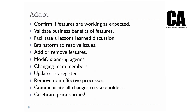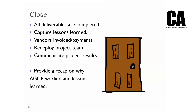Communicate all changes to stakeholders and celebrate prior sprints — if you've done something really well, pat each other on the back. The close stage is where everything's done: all deliverables are completed, you've reported back to the client, any revisions and changes have been done, you capture lessons learned, invoice payments, redeploy your project team to a new project, communicate the project results to all stakeholders, and provide a recap on why agile worked and what lessons were learned.